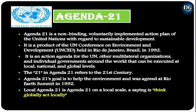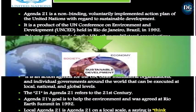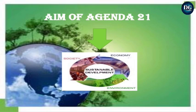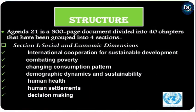Agenda 21's goal is to help the environment and was agreed upon in 1992. Local Agenda 21 is Agenda 21 on a local scale, based on the principle 'think globally, act locally.' The aim of Agenda 21 is the sustainable development of society, economy, and environment.